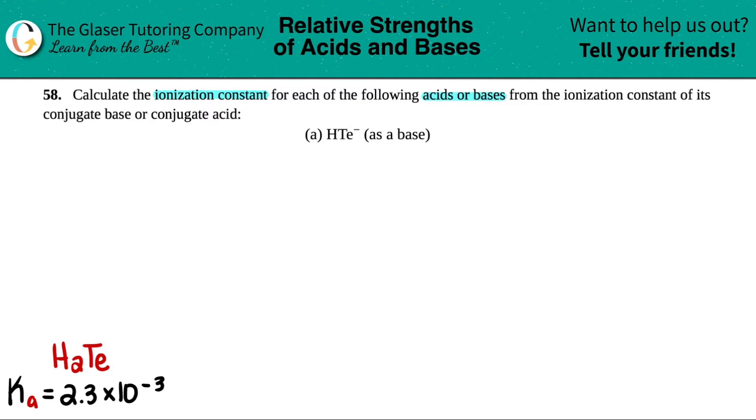So if they're already telling us that HTE- is going to be a base, we're trying to solve for Kb. Maybe I'll write that in blue. Kb, B for base. And that's the ionization constant.